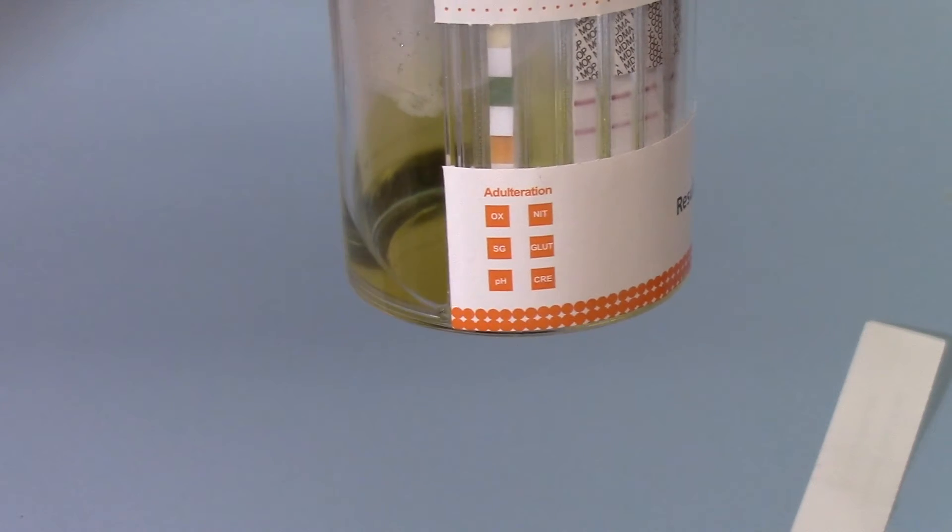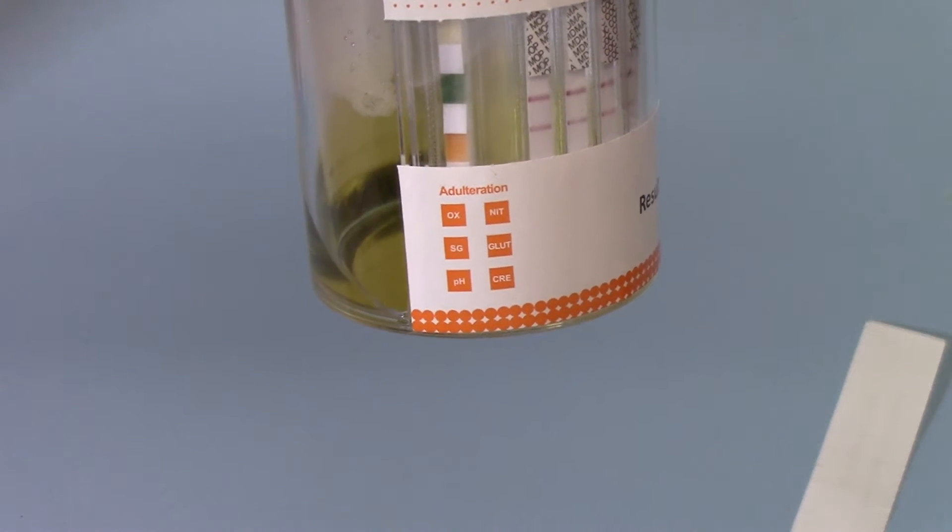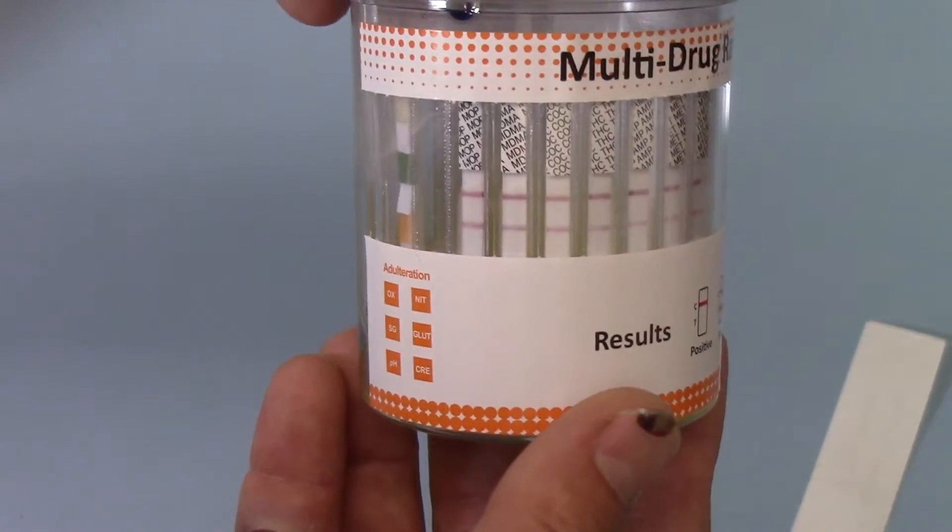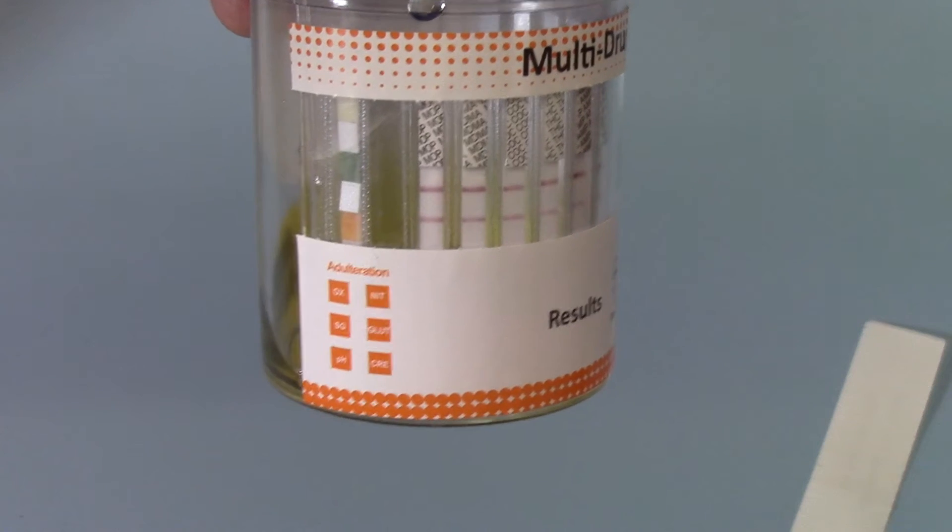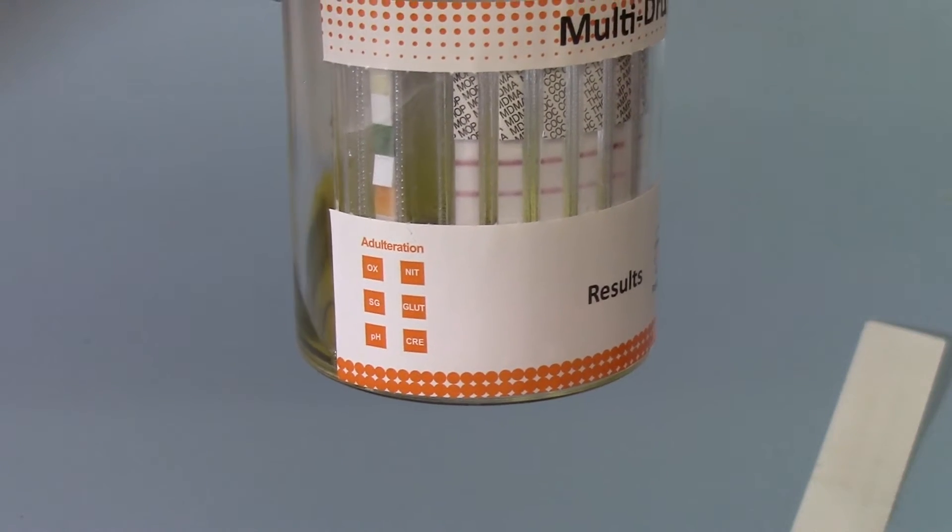And they should be within the normal ranges that are shown on that adulteration display card. If they are not, again, that would alert your suspicion as to whether this has been adulterated or diluted.